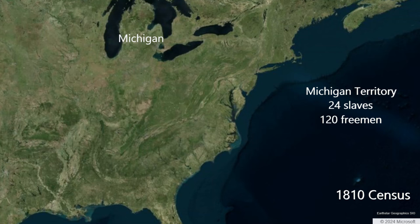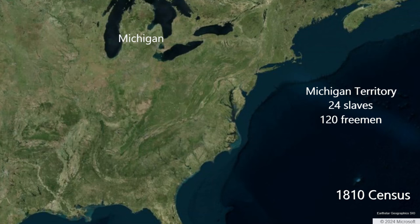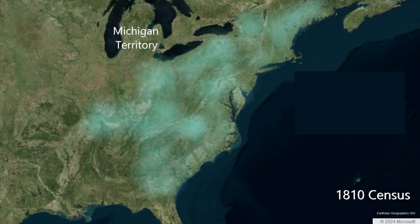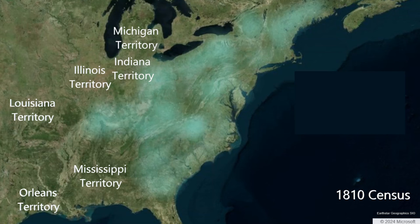Michigan Territory had 24 slaves and 120 freemen. In 1810, the United States is a rapidly growing nation, and her boundaries are expanding quickly across the North American continent. However, the new nation will have to contend with Spain to the south, Britain to the north, and Native America to the west.